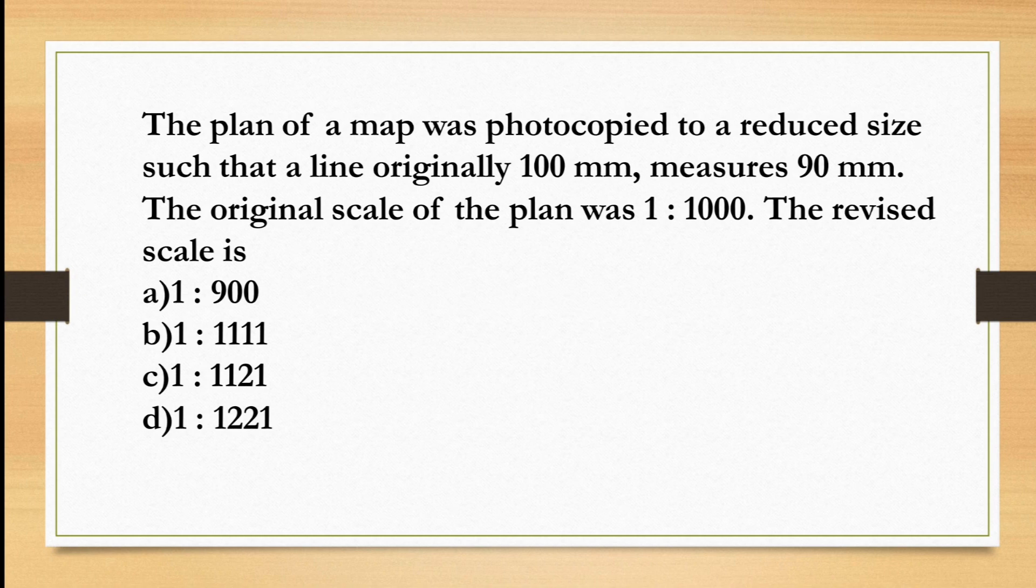Next one is a numerical question. The plan of a map was photocopied to a reduced size such that a line originally 100mm measured 90mm. The original scale of the plan was 1 is to 1000. There are 4 options: 1 is to 900, 1 is to 1111, 1 is to 1121, and 1 is to 1221.